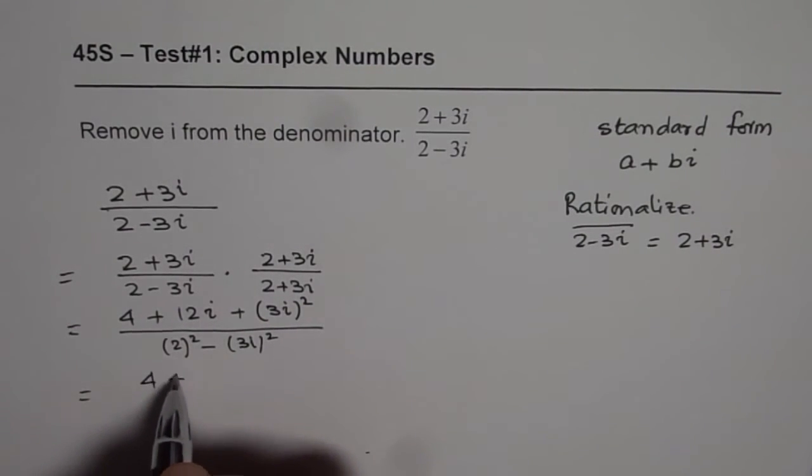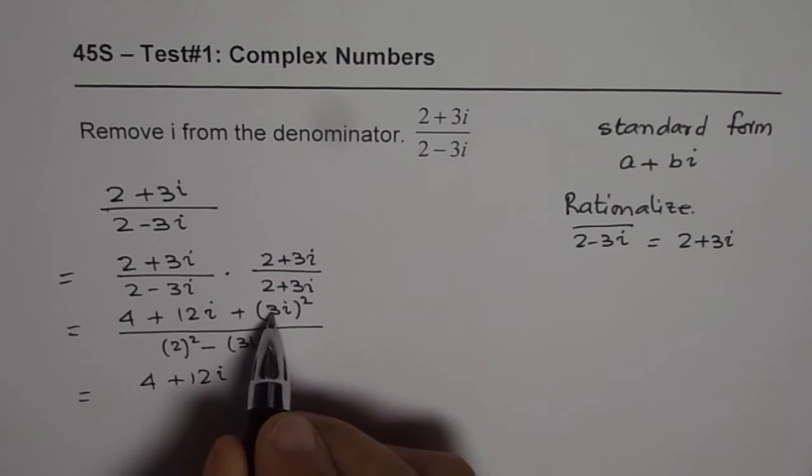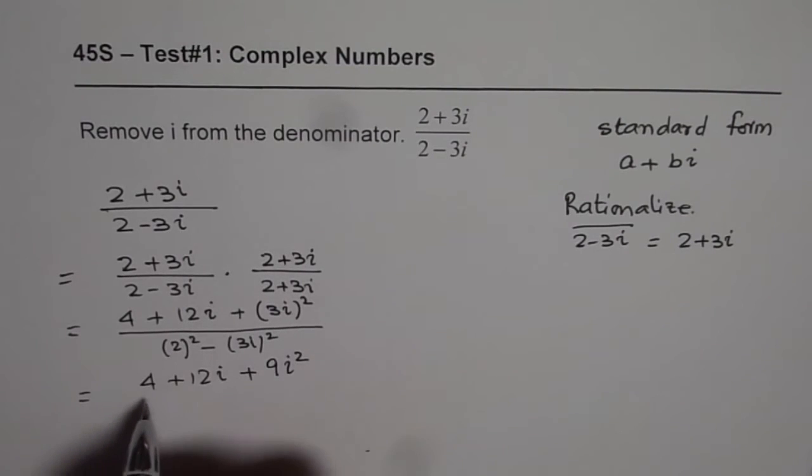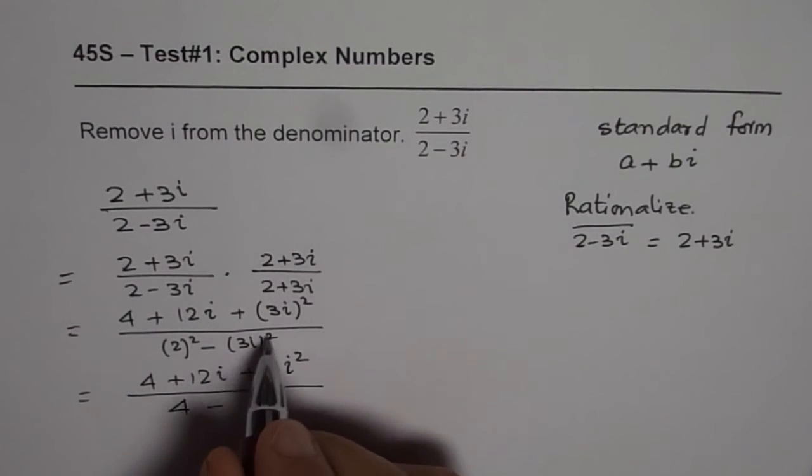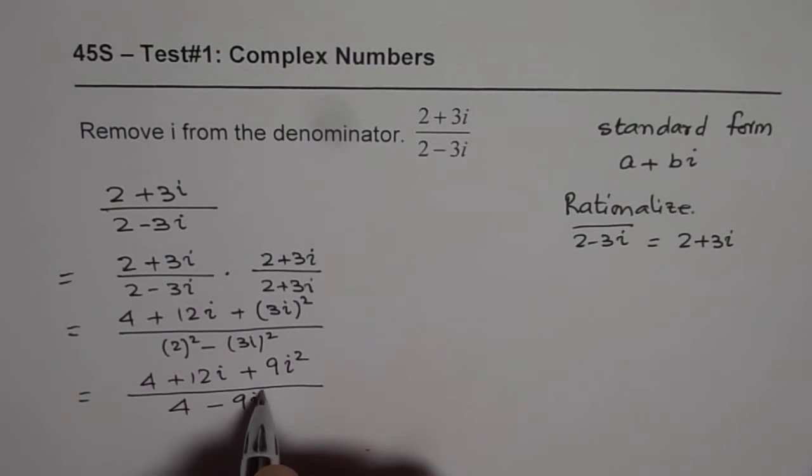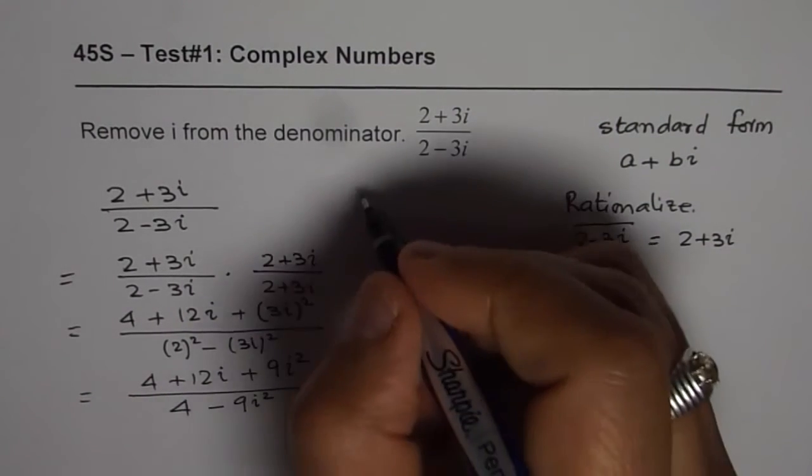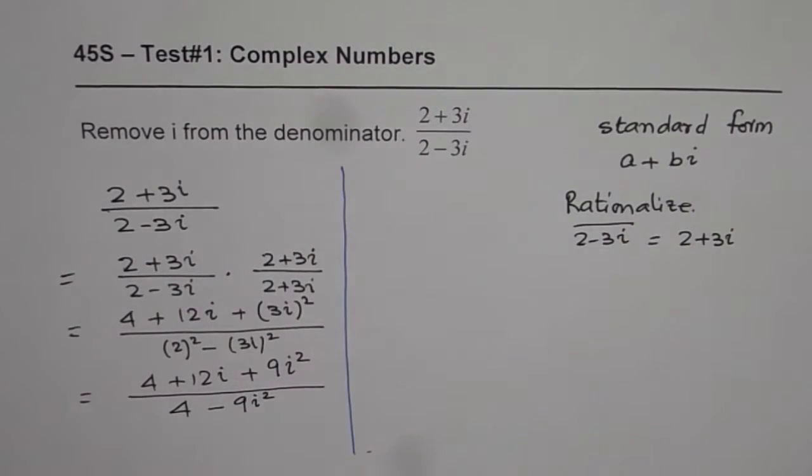We get 4 plus 12i, 3i square means plus 9i square, divided by 4 minus 3i square means 9i square. Let me take it to the right side and do further simplification of the expression.